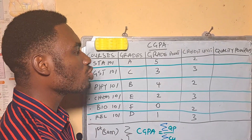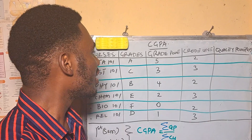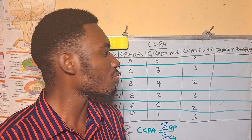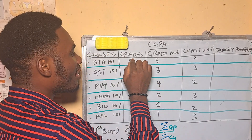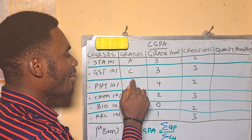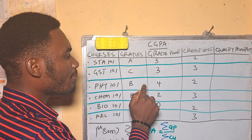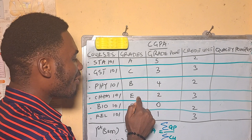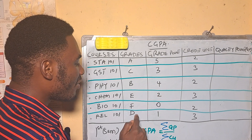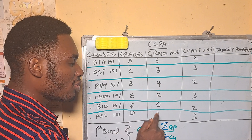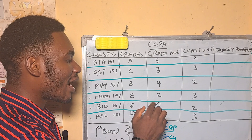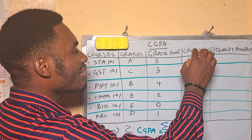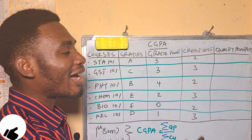The next column is what I call the grade points. These grade points are peculiar to some institutions. If you have an A your grade point is 5; a B is 4; a C is 3; a D is 1; an E is 2; while if you have an F you don't have any grade points at all — it's zero points.